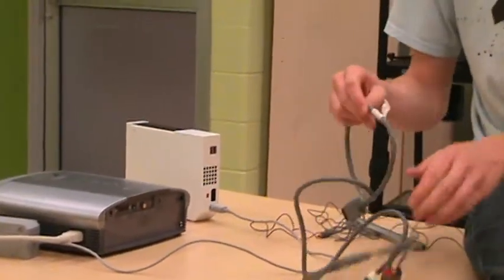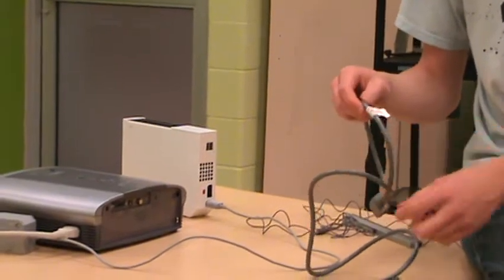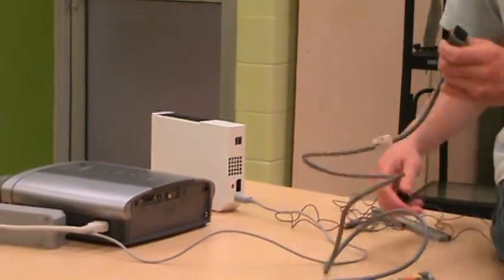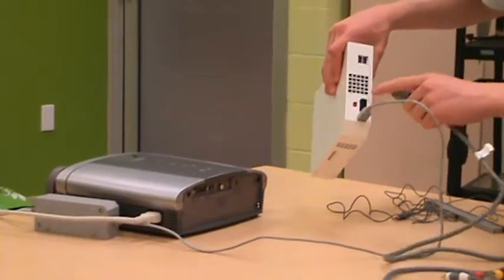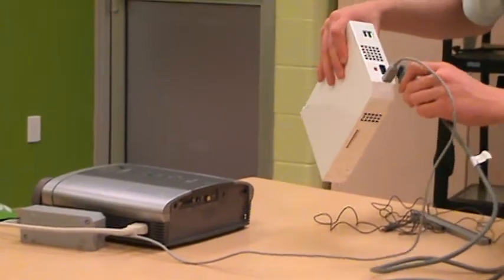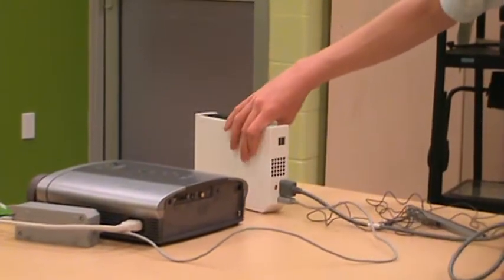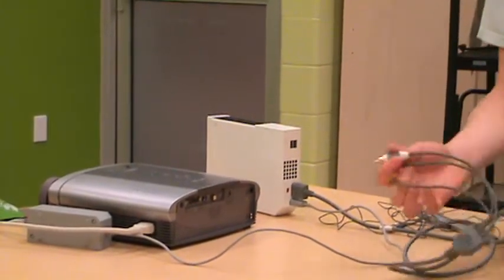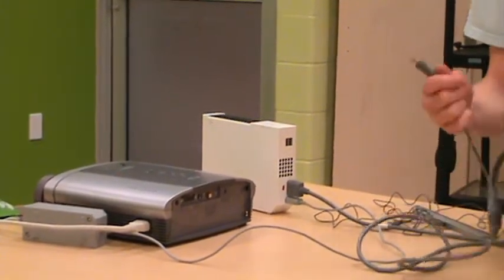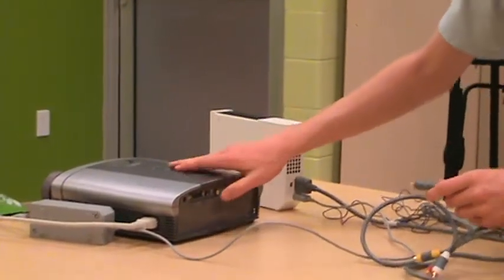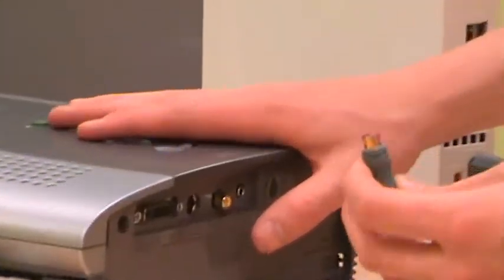Now I take this grey cord, labeled Wii and projector, and I plug this end into the large black plug on the back of the Wii, labeled AV Multi Out. And then on the other end, I take the grey cord and put it into the hole back here, labeled Video 1 S.